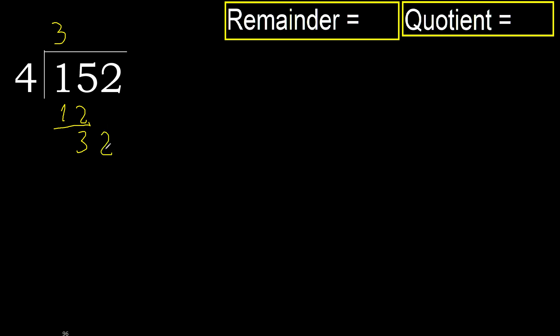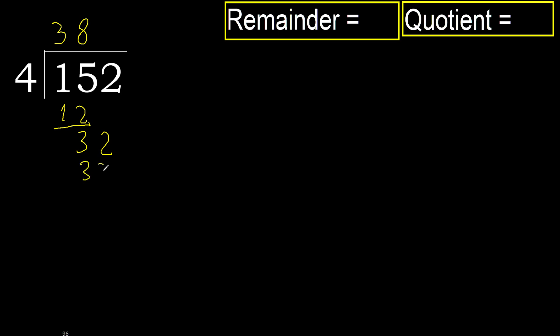Next, bring down: 32. 4 multiplied by 8 is 32 — 32 is not greater. Ok, subtract. 0.